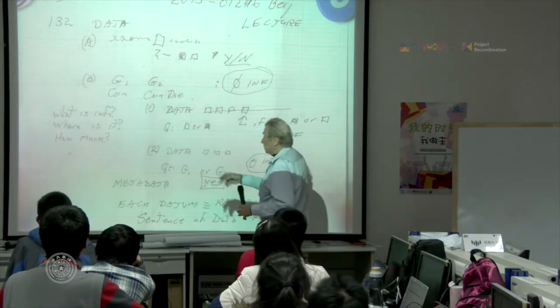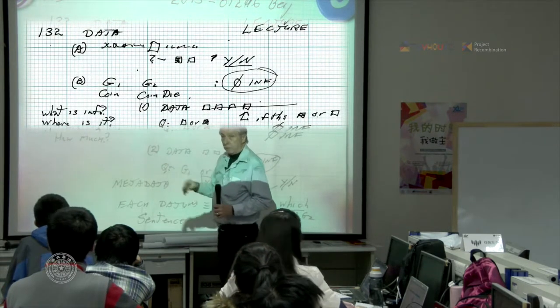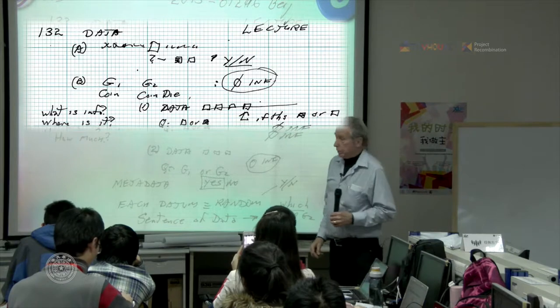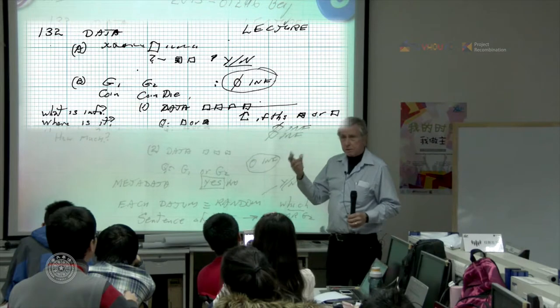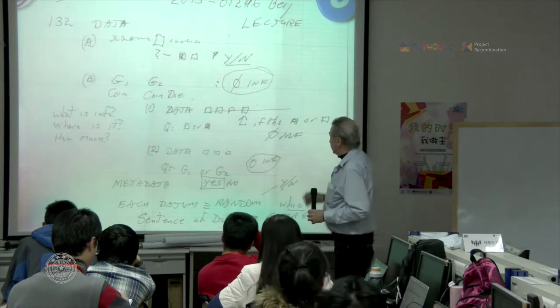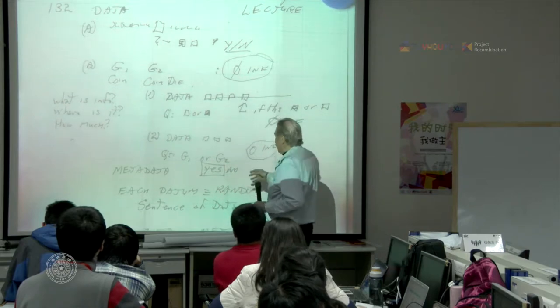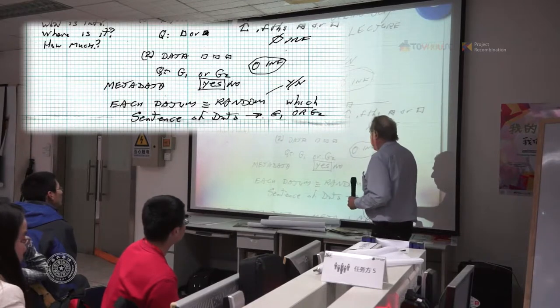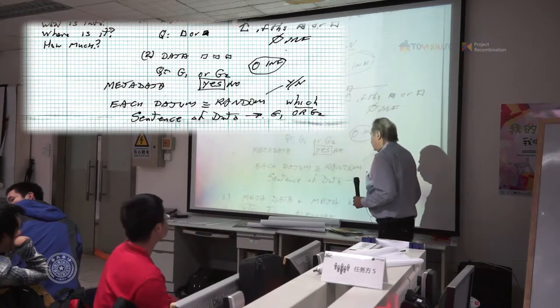So the question comes up is, what is information and where is it and how much do you have? Well, you can measure information. And where is it? That's a puzzling sort of thing or a confusing kind of thing. It's actually in the language as a set of sentences. It's not in any sentence. It's not that this sentence shows you one thing or another. It's how the language goes together. Now, we're getting now into metadata. So let's begin to think of this. Every datum is random, but the sentence data can choose between one grammar and the other.